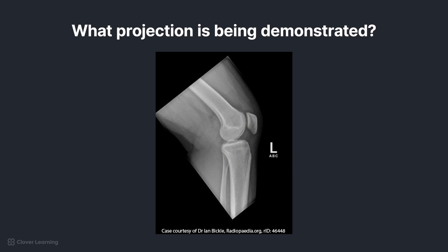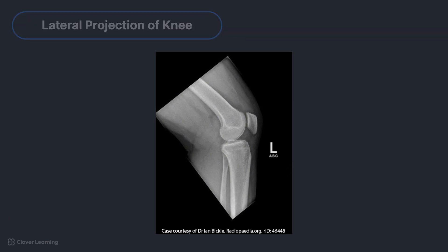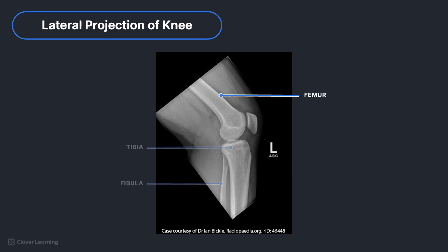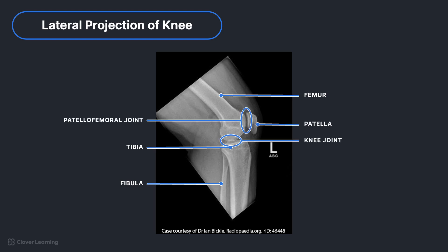We have one final projection for the knee. Yes, this is a lateral projection. We can tell it is lateral because the distal femur, proximal tibia and fibula, and patella are all demonstrated in lateral profile, and the patellofemoral and knee joints are open. We know this is a true lateral because the posterior borders of the femoral condyle are directly superimposed, and the fibular head is slightly superimposed by the proximal tibia.